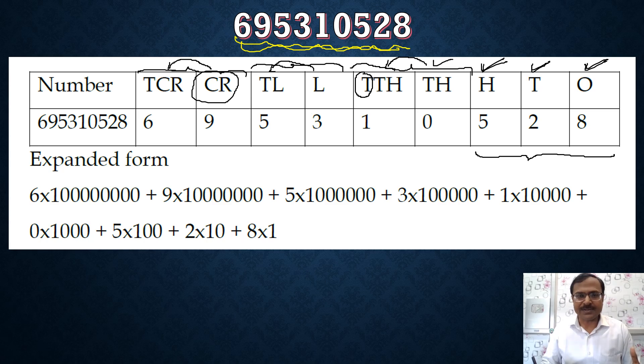Now how far do we have to write the placement boxes? We have to write the placement boxes up to the number of digits in the given number. Let's count: 1, 2, 3, 4, 5, 6, 7, 8, 9. So we have to write nine placement boxes and that's what we have done there. And then you can just write the number in the serial order there: 6, 9, 5, 3, 1, 0, 5, 2, 8.